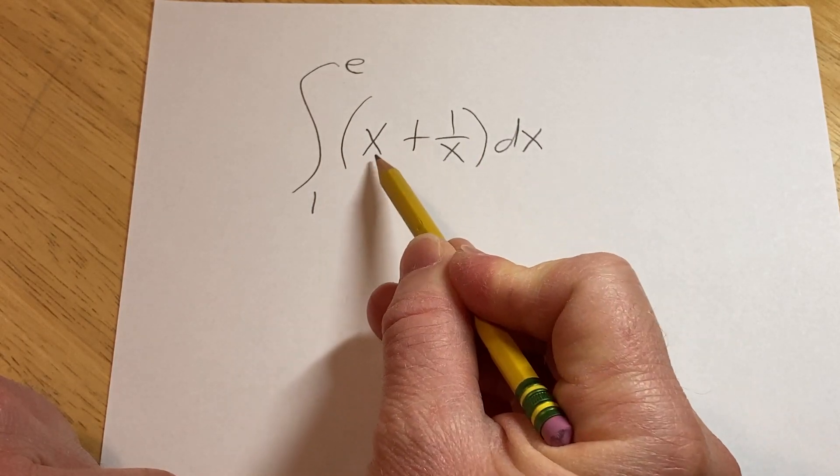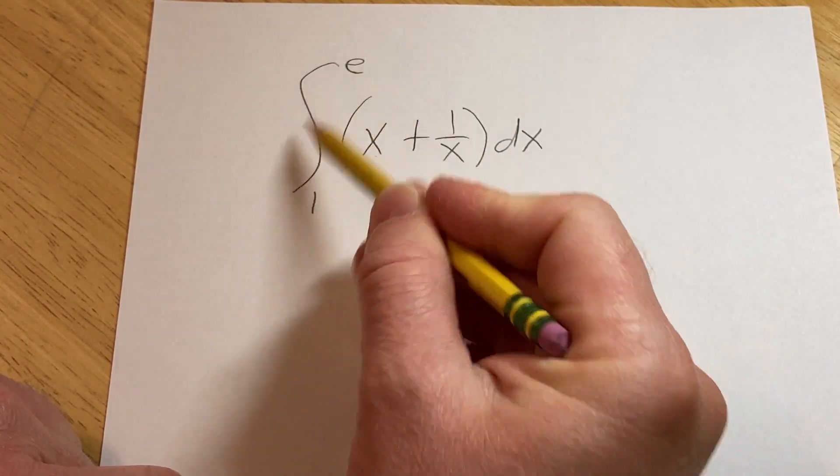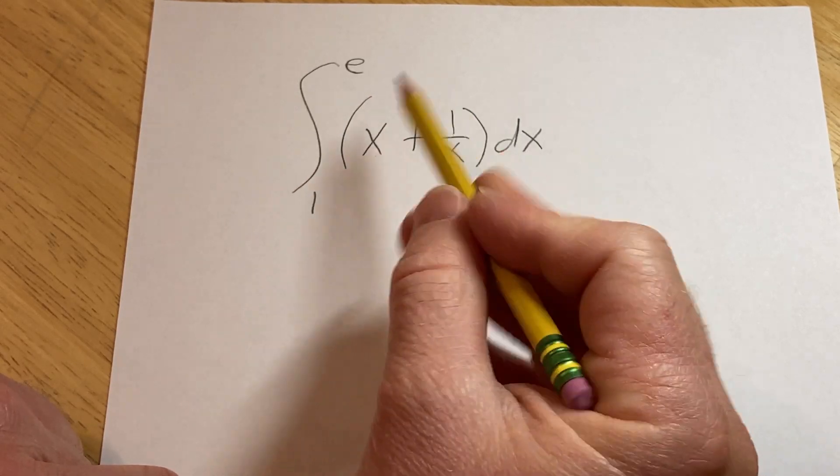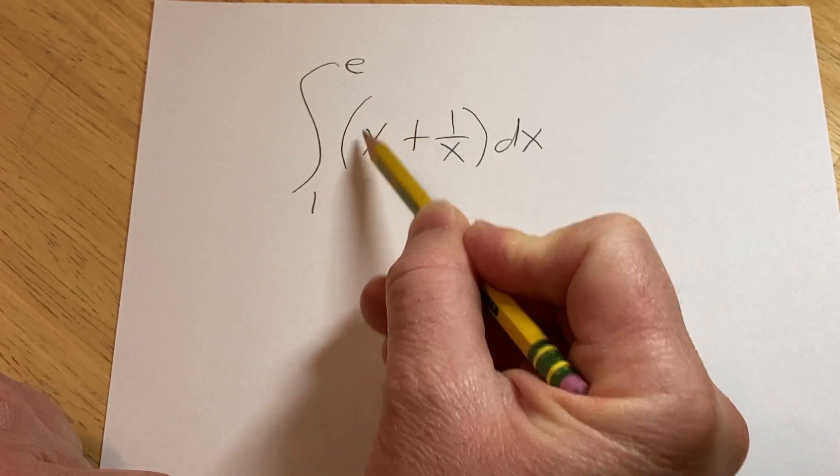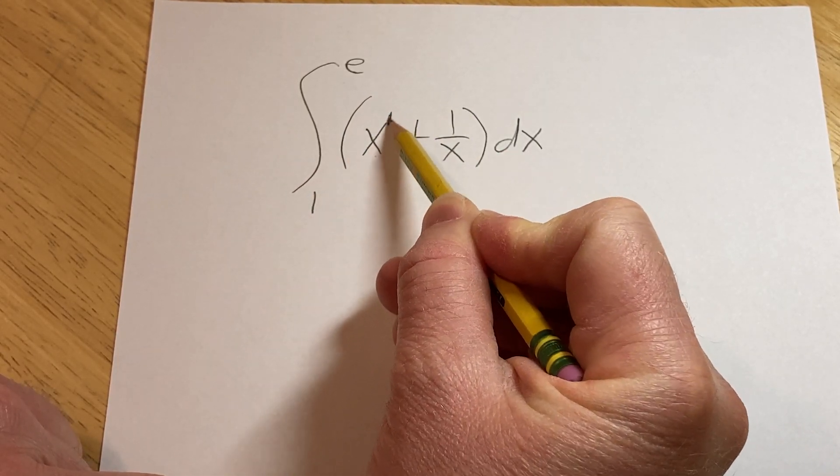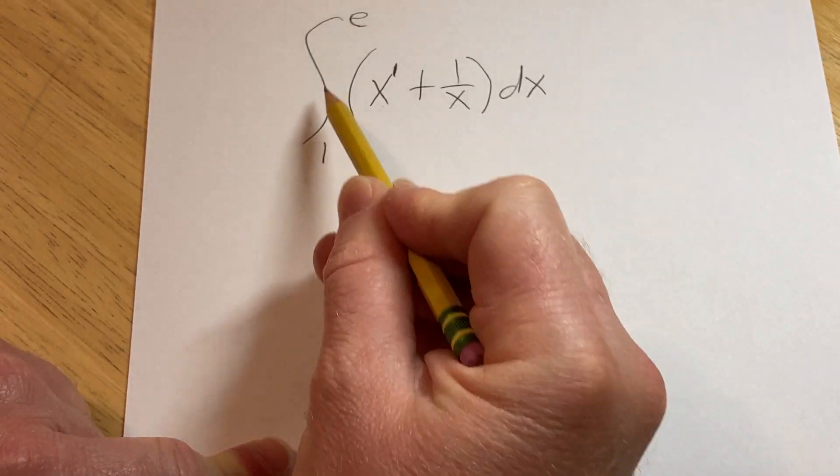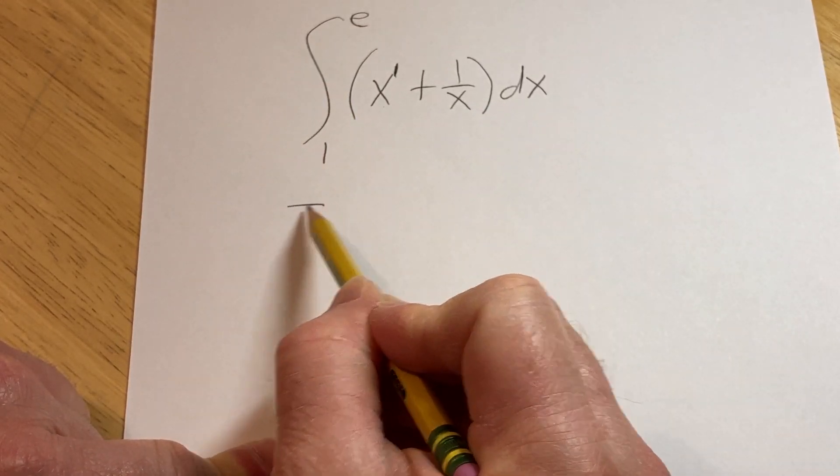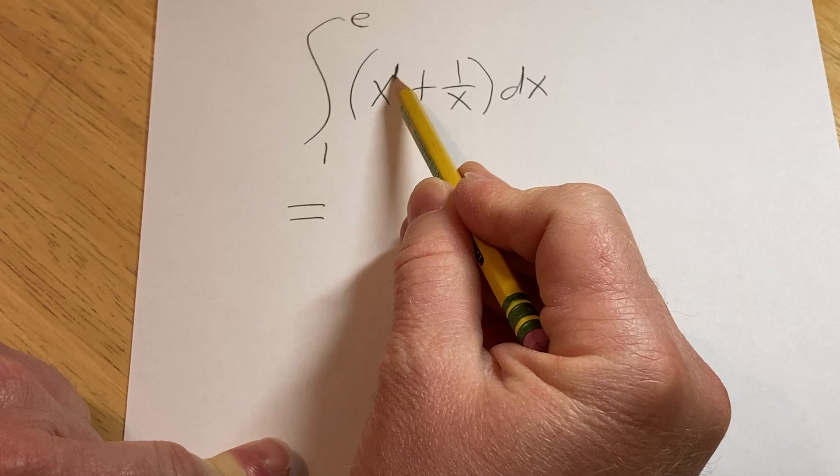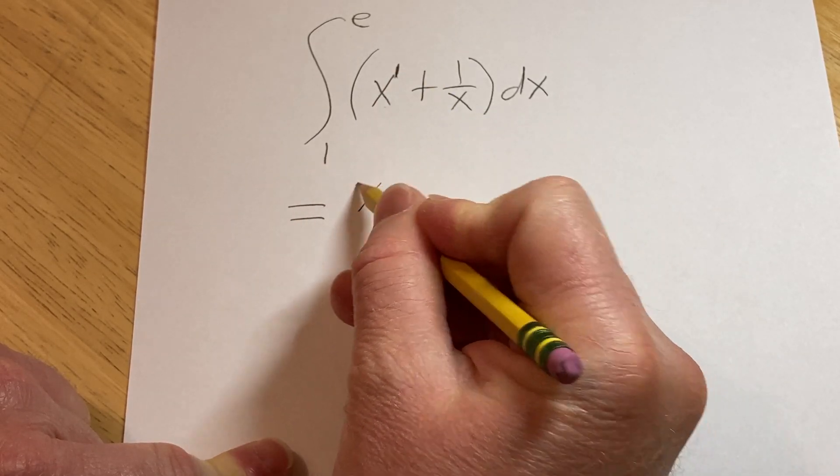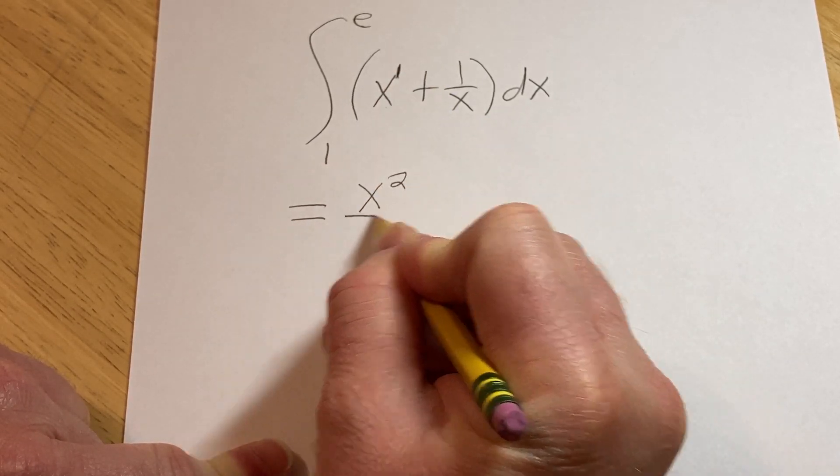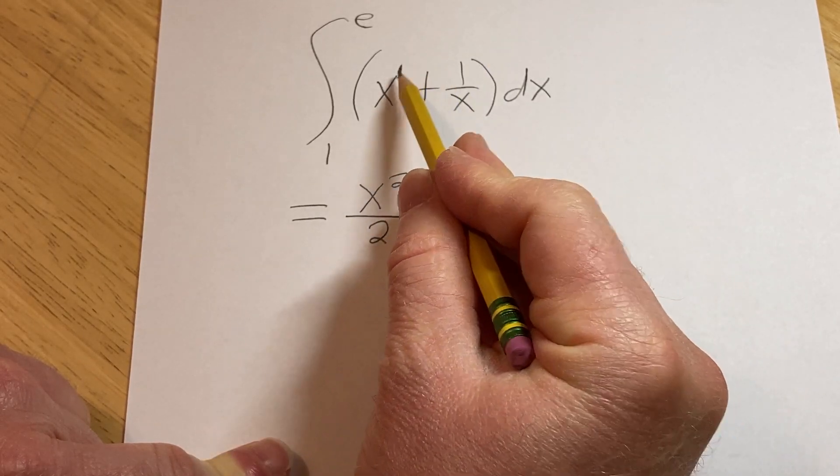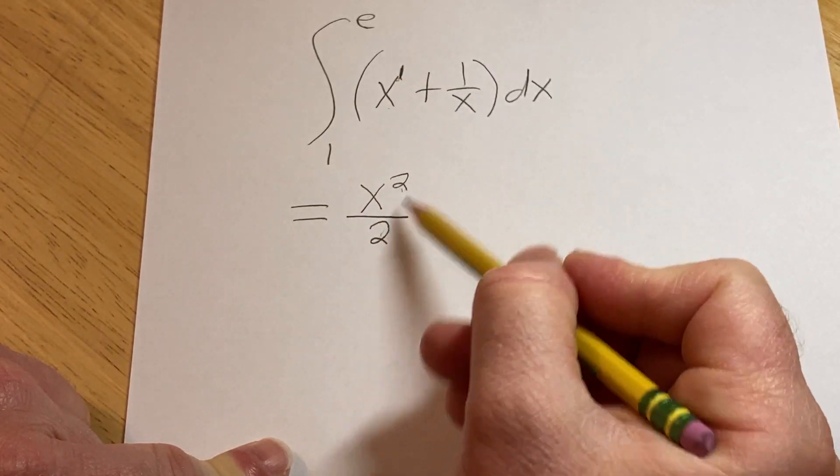So basically all we have to do is integrate each piece and then use the limits of integration. For this first piece it's simply x to the first power so we use the power rule. We drop the integral sign, we drop the dx, and you just add 1 to the 1 here. So you get x squared and then you divide by 2. You add 1, you get 2, and then you divide by the same result.